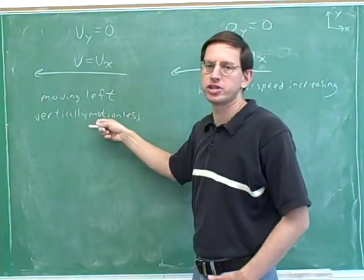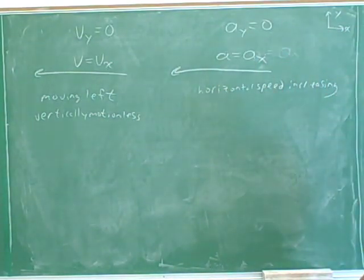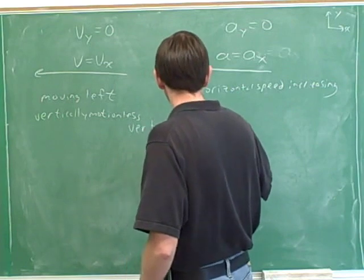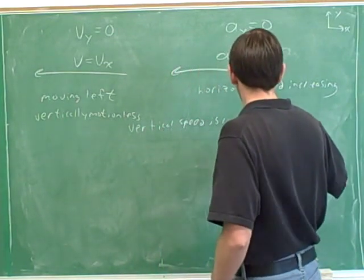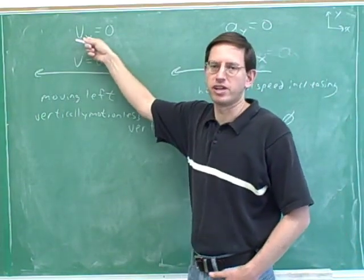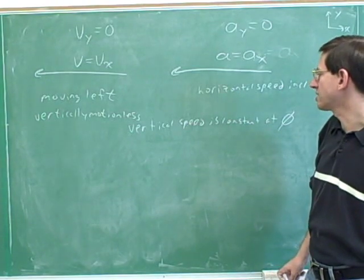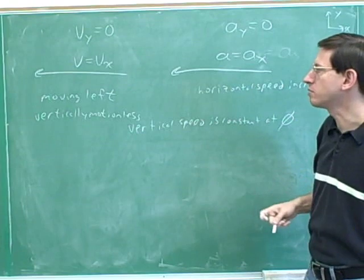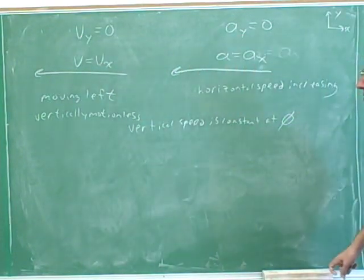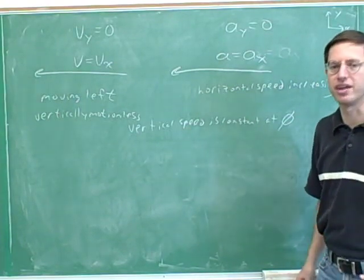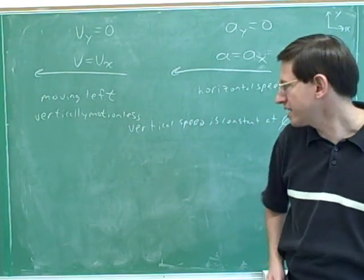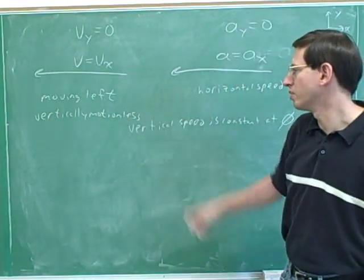Our vertical speed is not changing — it's constant at 0. How do we know it's constant? Because the vertical acceleration is 0. And how do we know the vertical speed is 0? Because the vertical velocity is 0. So this object is not moving vertically, and it's not going to start moving vertically either. Remember that sometimes it's possible to be motionless just for an instant if you're changing direction, but that's not what's happening here. This is not just vertically motionless for an instant — it looks like it's permanently motionless vertically.